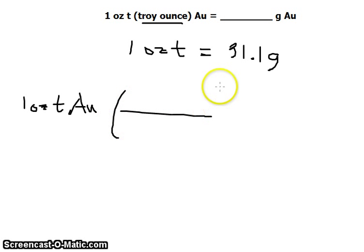One troy ounce of gold, multiply it by the conversion factor. You write in the denominator the conversion factor that you wish to cancel out, and that is one troy ounce. In the numerator is the unit that you desire, that is 31.1 grams.